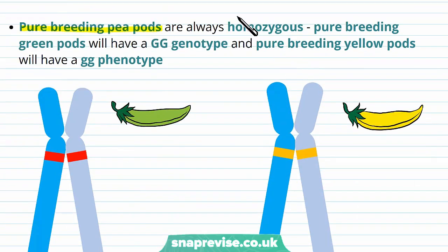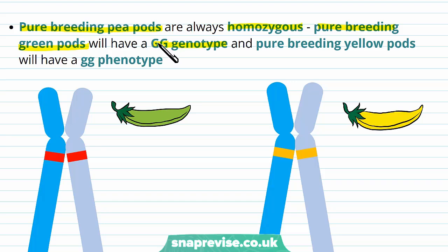Pure-breeding pea pods are always going to be homozygous. So pure-breeding green pods will have a capital G, capital G genotype — two dominant alleles — and the pure-breeding yellow pods will have little g, little g genotype.